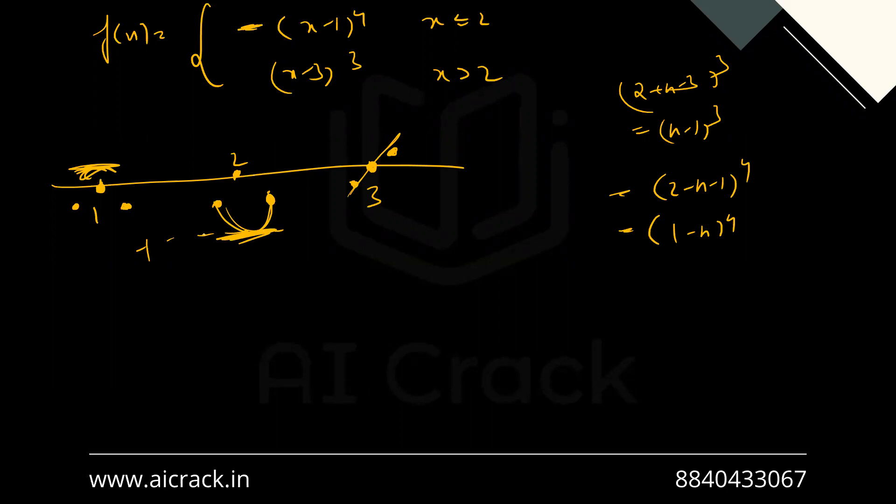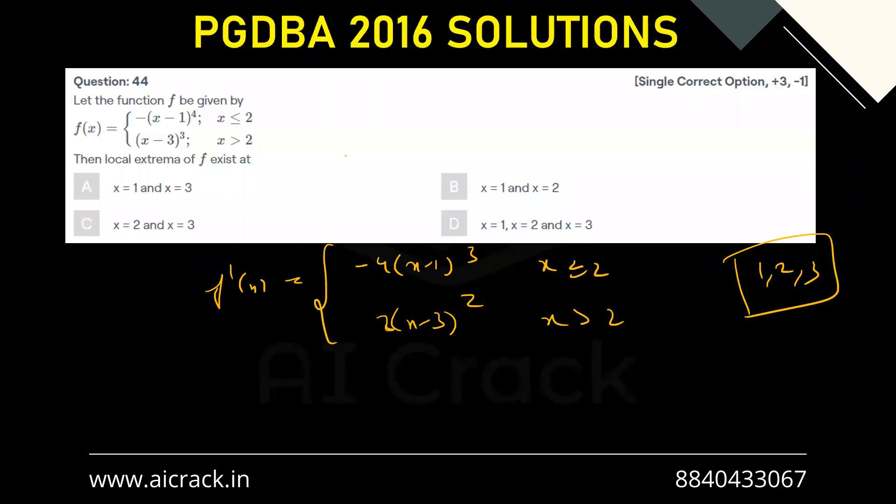So we have extrema at x equals one and x equals two, but not at x equals three. The answer would be option B.